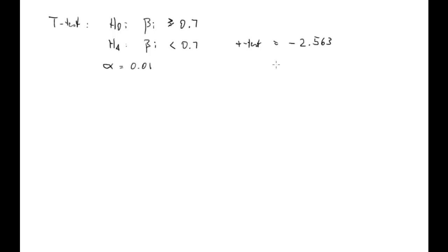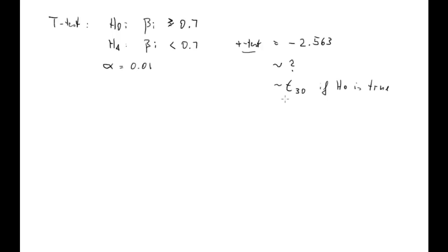To determine the p-value, you first need to know the distribution of the test statistic. Under certain circumstances this will be t-distributed; under others, normally distributed. We'll use a t-distribution with 30 degrees of freedom. Importantly, this is the distribution of the test statistic if H0 is true — what we sometimes call the null distribution.